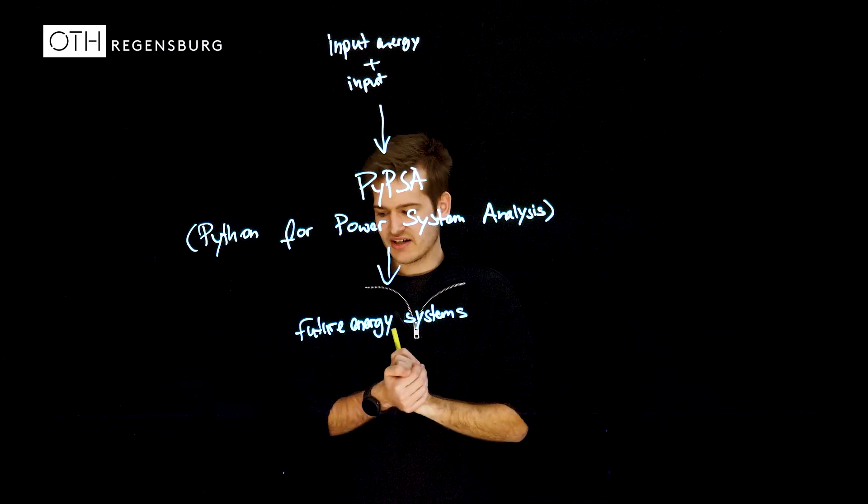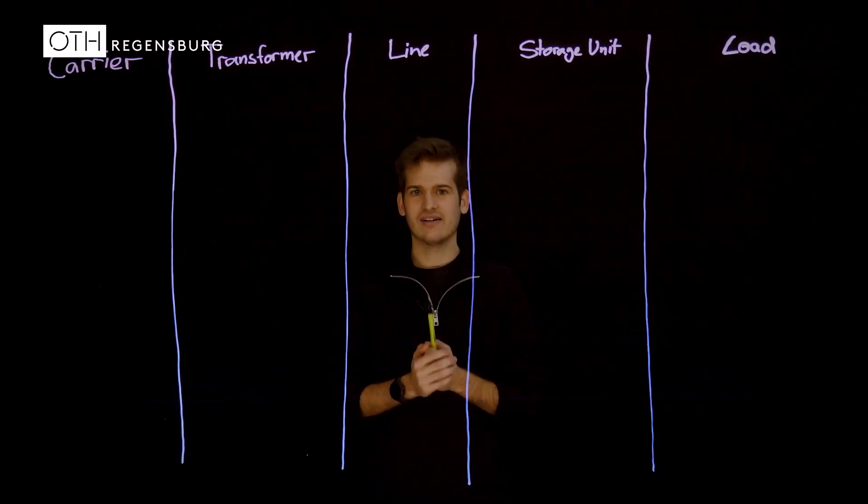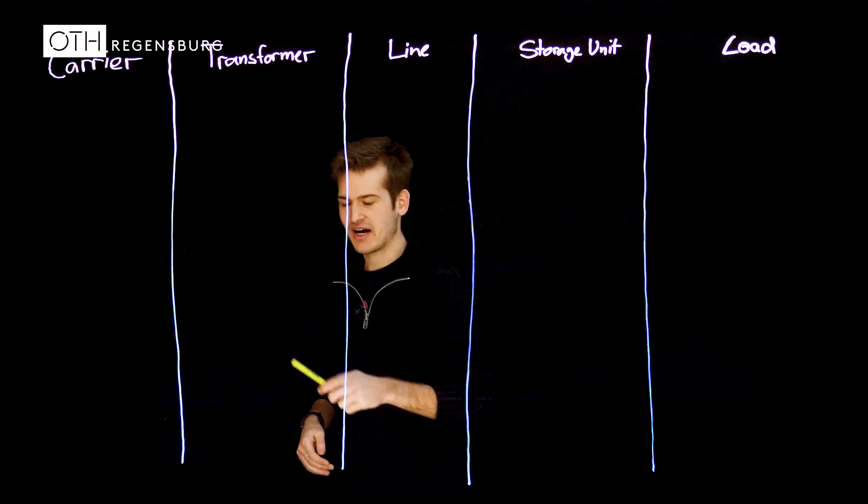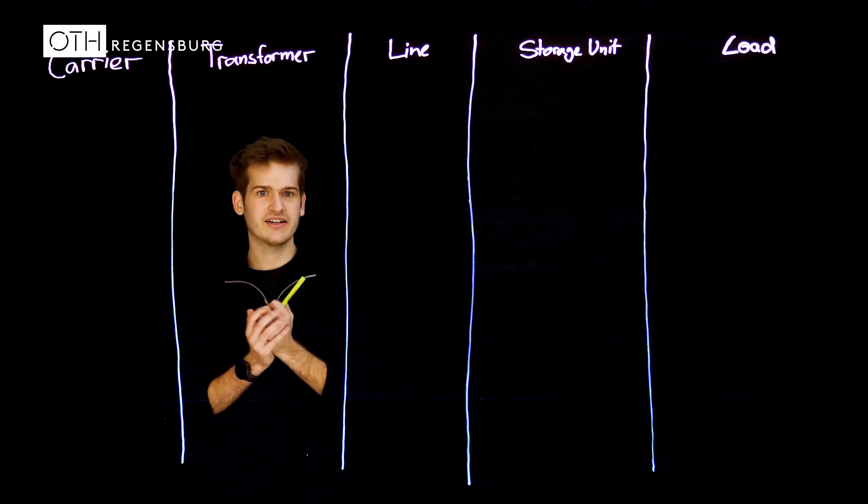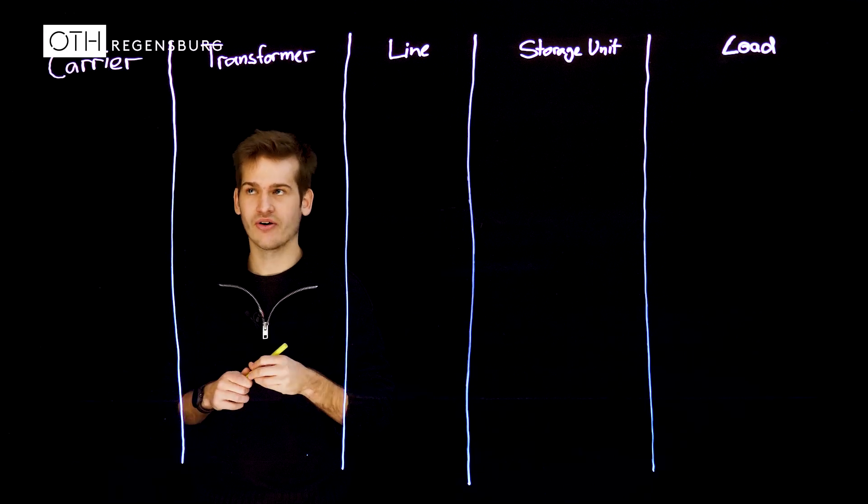But how does an energy system model in PIPESAR look like? An energy system in PIPESAR has carriers. These are energy carriers like for example solar or wind or gas.